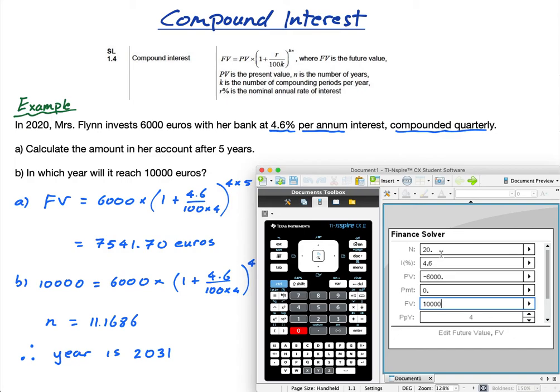Now what you can also do is put in the future value. If I put in the future value of 10,000 and I wanted to find n, I then go to n and I press enter. Because it's like 44.6 quarters, I need to divide by 4 to get 11.168.